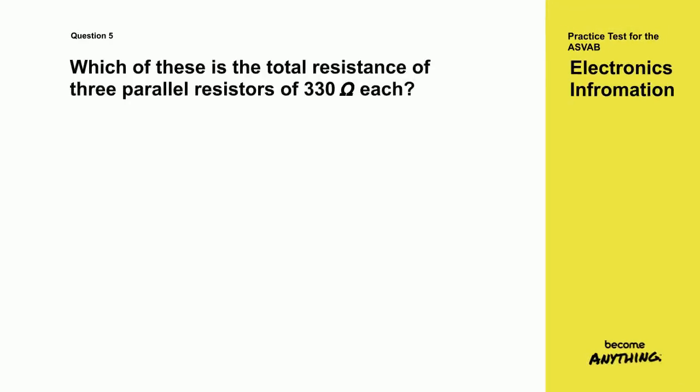Question 5. Which of these is the total resistance of three parallel resistors of 330 ohms each? A. 990 ohms. B. 330 ohms. C. 660 ohms. D. 110 ohms.